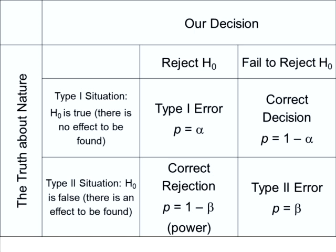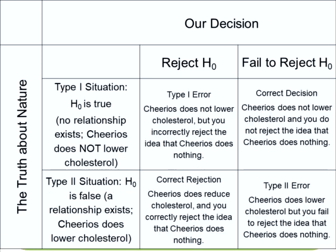The bottom-left box: the null is false, there is something to be found, and you do reject the null — that's a correct rejection. 'Power' is a very important concept you'll encounter repeatedly in your experimental design class. The top-right and bottom-left are good decisions. But if the null is true and you reject it anyway — you say there's an effect when there isn't — that's a Type 1 error. If something truly makes a difference but you fail to reject the null and don't find it, that's a Type 2 error.